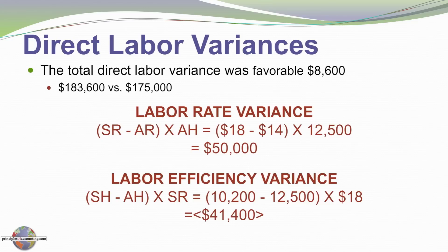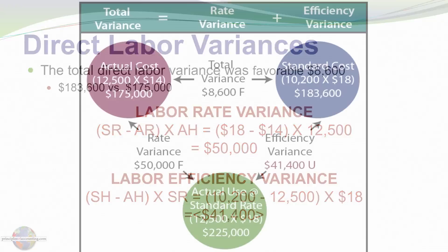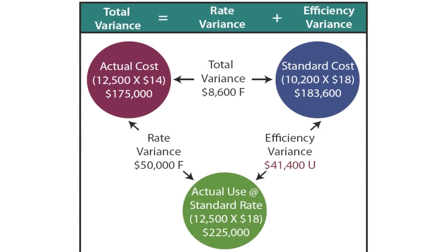As it turns out, Blue Rail hired inexperienced labor and was able to pay them less. However, they appeared to be somewhat inefficient — they took more hours to do what was necessary. So reviewing: actual cost was $175,000, standard cost was $183,600, total variance was $8,600 favorable, divided between the rate variance and the efficiency variance.